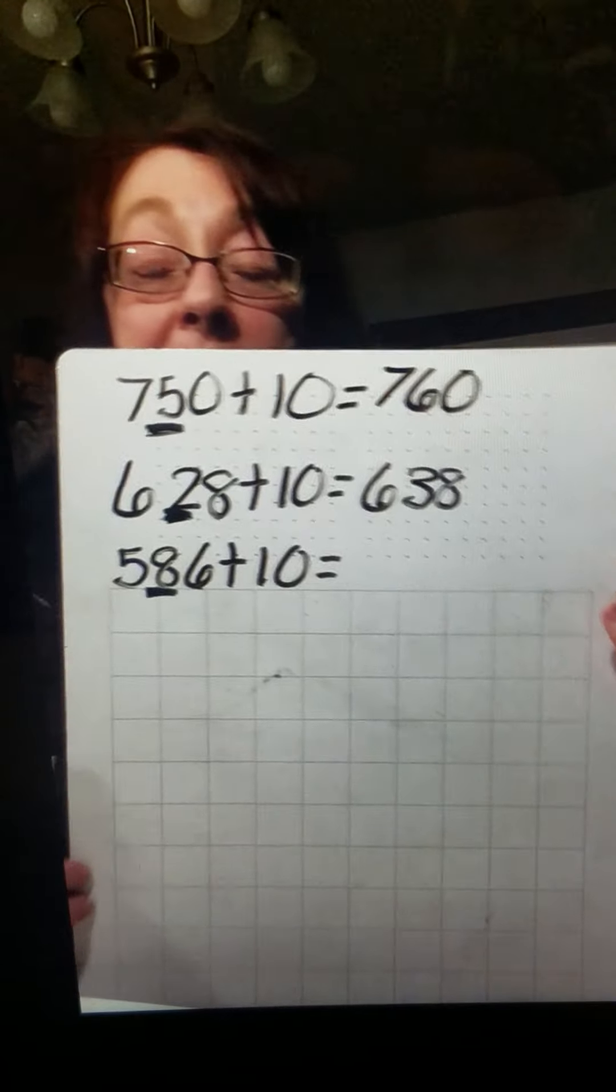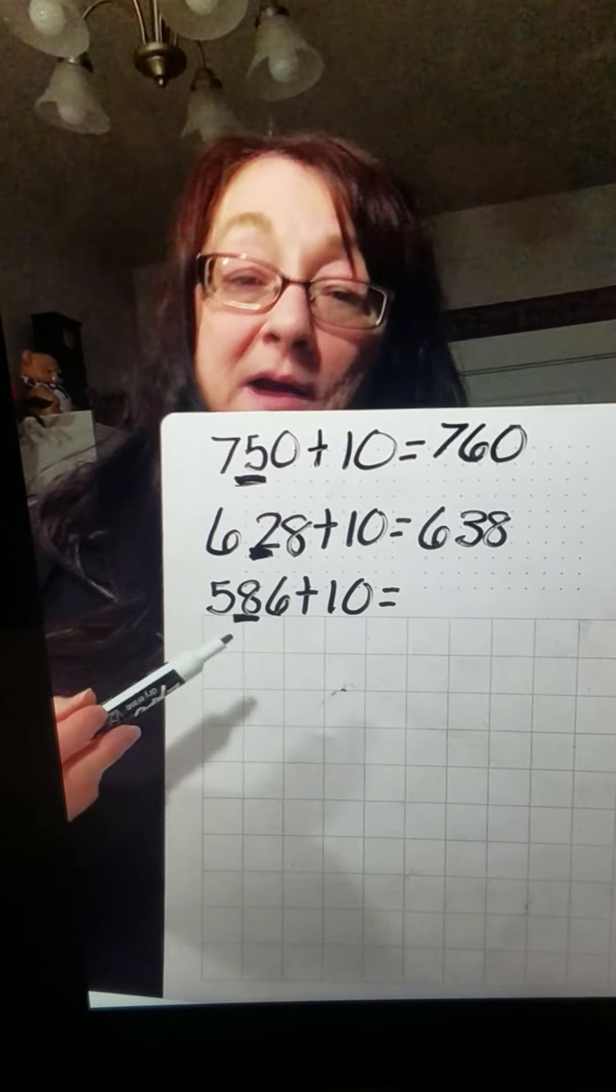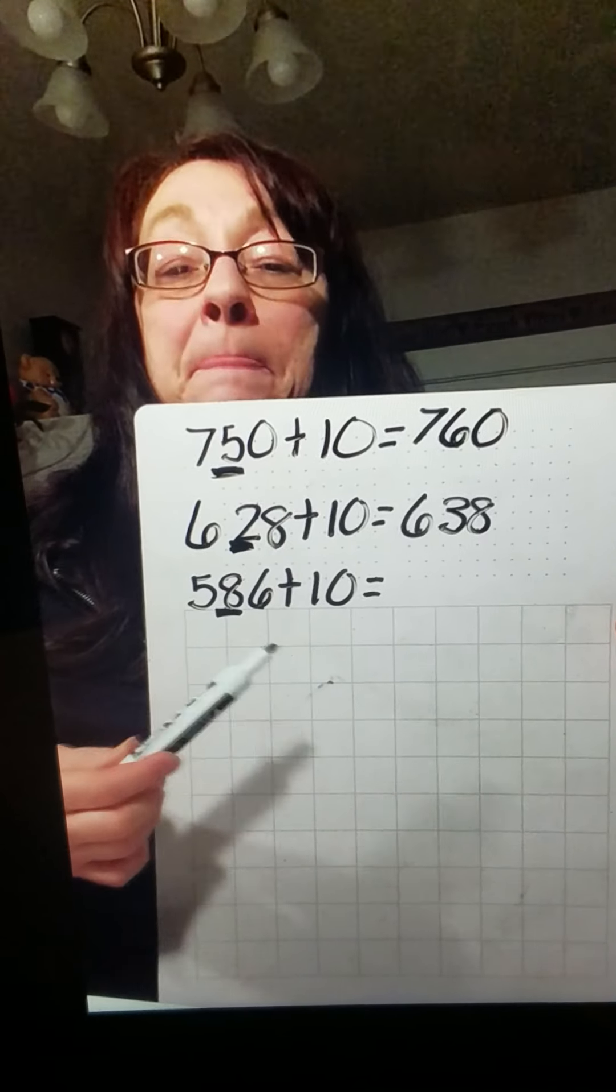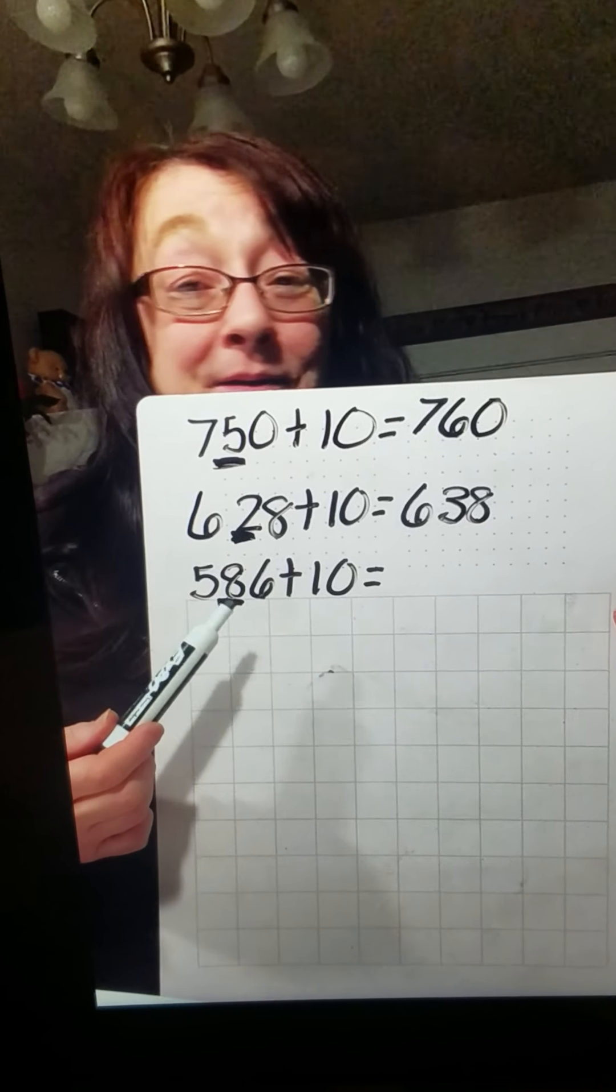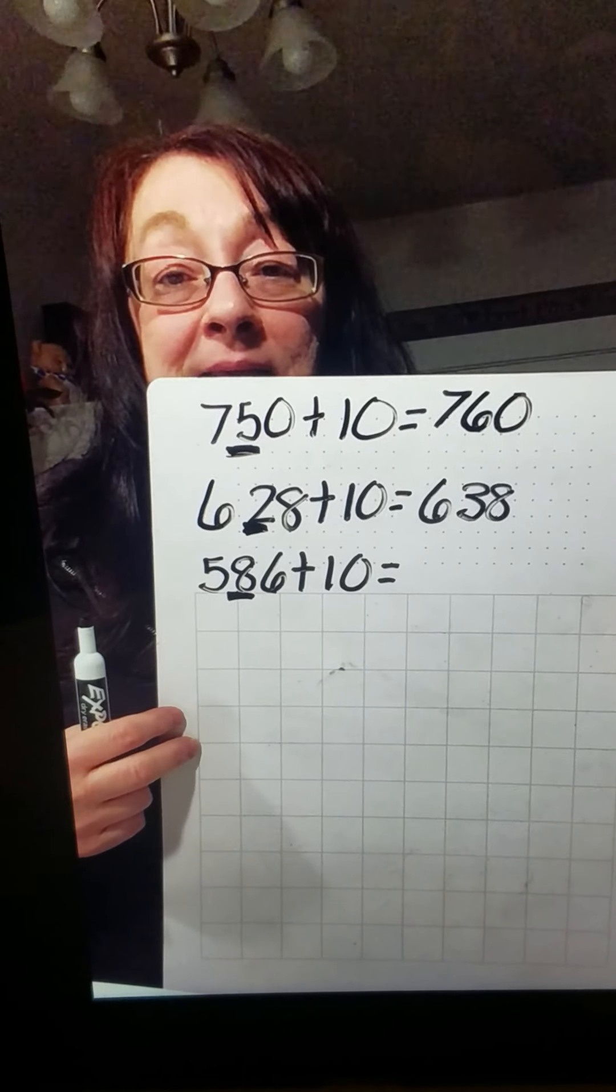586 plus 10. Remember, I have the little line underneath the 8, which is where our tens place is. If we just add 1 to the 8, or add 1, and thinking in your mind, adding 1 more group of 10 to the 8 that are already there, now that would give me 9, right? So now I have 596.